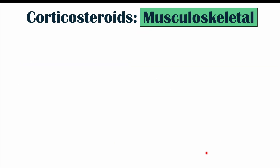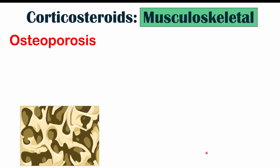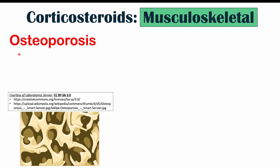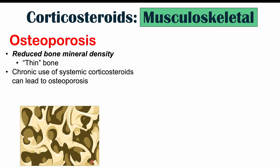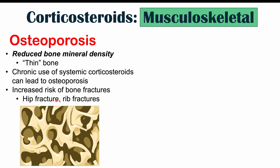The first system we're going to discuss is the musculoskeletal system. Corticosteroids have effects on both bones and muscles. Looking at bones more specifically, corticosteroids can lead to or increase the risk of osteoporosis — a condition of reduced bone mineral density, essentially thin or hollowed-out bones. This is especially the case with chronic use of systemic corticosteroids and higher doses. Osteoporosis leads to an increased risk of bone fractures, such as hip fractures and rib fractures.